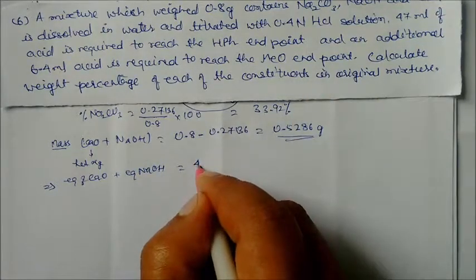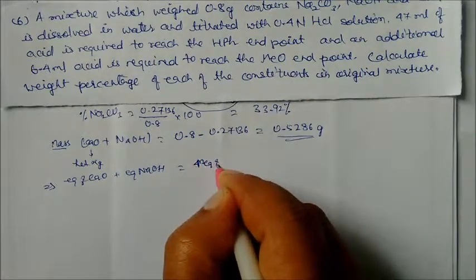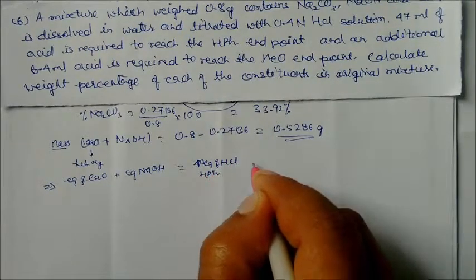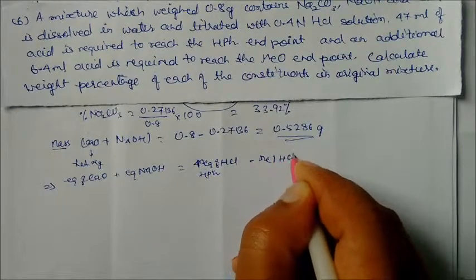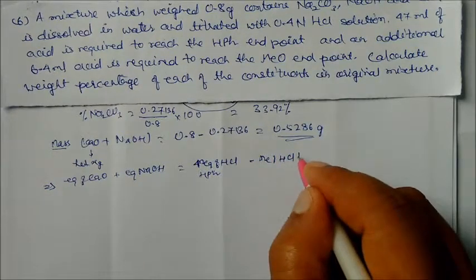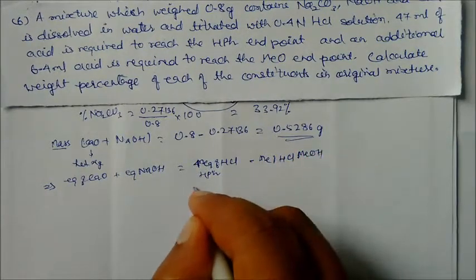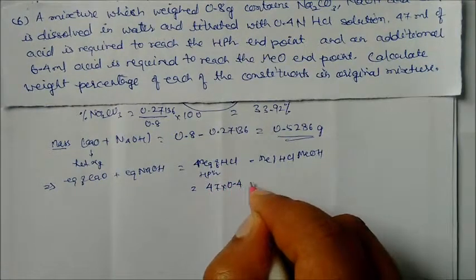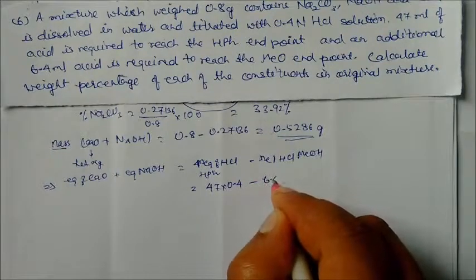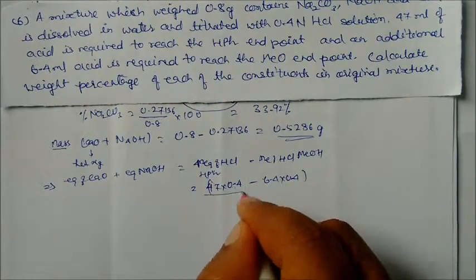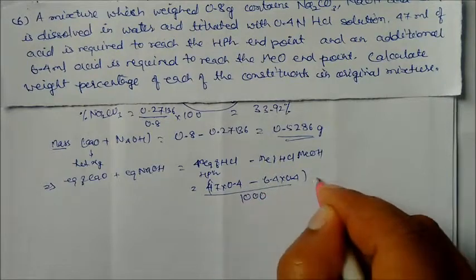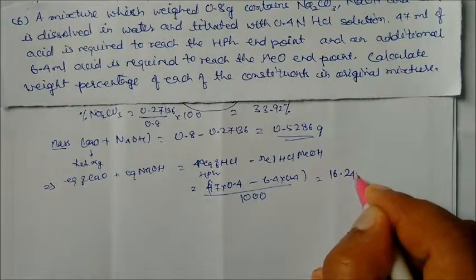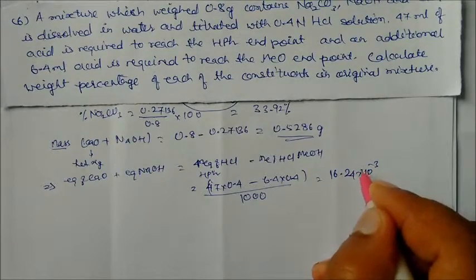This gives: (47 × 0.4 − 6.4 × 0.4) / 1000. Solving: (18.8 − 2.56) / 1000 = 16.24 × 10⁻³ equivalents.